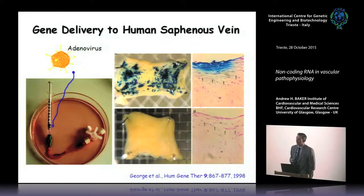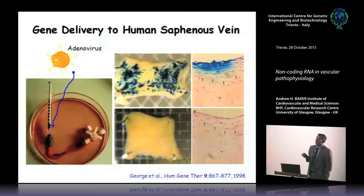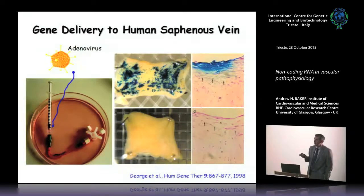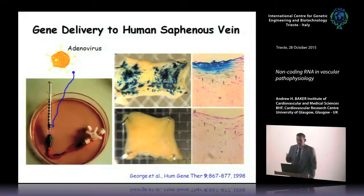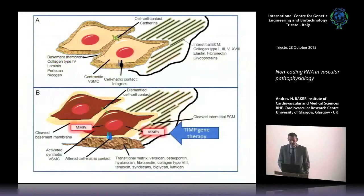We put high-titer adenovirus into a luminal dwell without excess pressure, leave it for 30 minutes, and at seven days in actual human tissue you get pretty good levels of gene transfer. In a model of neointima formation at 14 days, the cells infected are at the luminal surface — the same cells that migrate to form the neointima. So the virus targets the right cells and has no adverse effect on neointima formation itself; it's both efficient and safe.